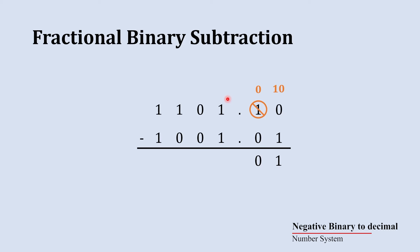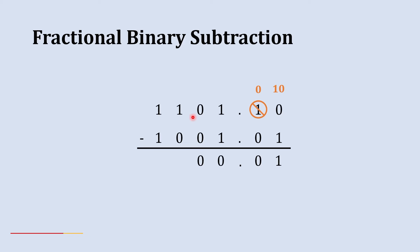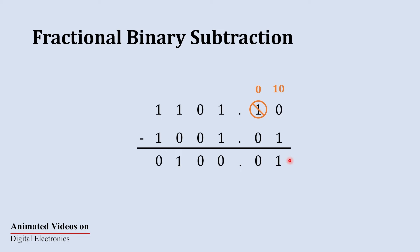When we reach the binary point, we place it at the same position as in the original numbers. Continuing to the left: 1 minus 1 gives 0, 0 minus 0 gives 0, 1 minus 0 gives 1, and 1 minus 1 gives 0. That is the answer of this first subtraction. This one was simple, designed to clearly explain the logic of borrowing.